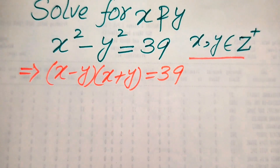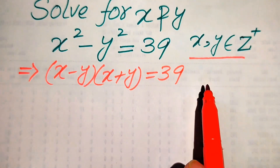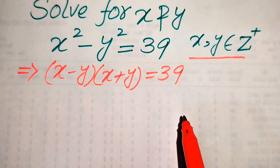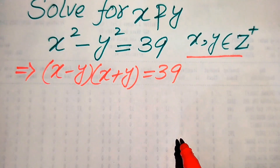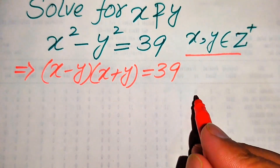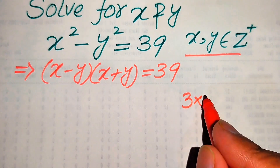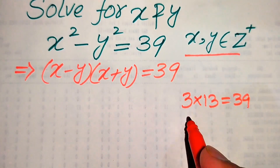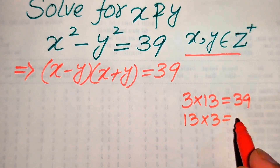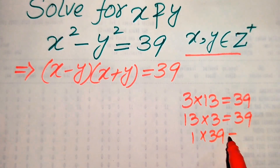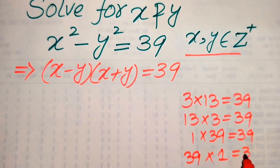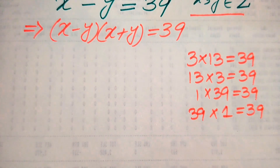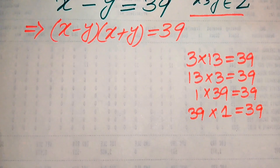On the left hand side we have two factors multiplied by each other, but on the right hand side we have only one factor. So now we find positive integral pairs of numbers whose product is 39. The possible pairs are: 3 × 13 = 39, 13 × 3 = 39, 1 × 39 = 39, and 39 × 1 = 39. These are the four possibilities.